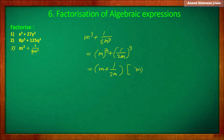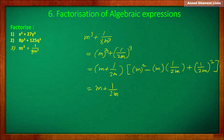So it is equal to (m plus 1 upon 2m) into the bracket: a squared is m squared, minus ab that is minus m into 1 upon 2m which equals 1 upon 2, plus b squared that is plus 1 upon 4m squared. So that is the answer — the factors of m cube plus 1 upon 8m cube.